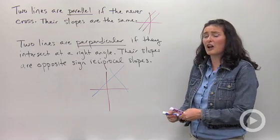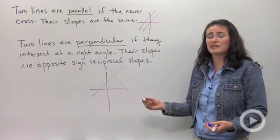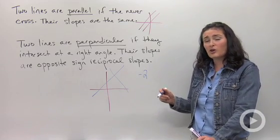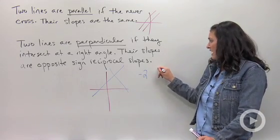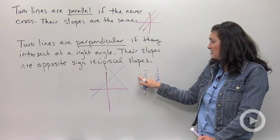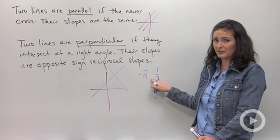Let's talk more about opposite sign reciprocal slopes. If I gave you the number negative two, the reciprocal of two is one half. Notice how instead of negative two, I wrote positive one half.